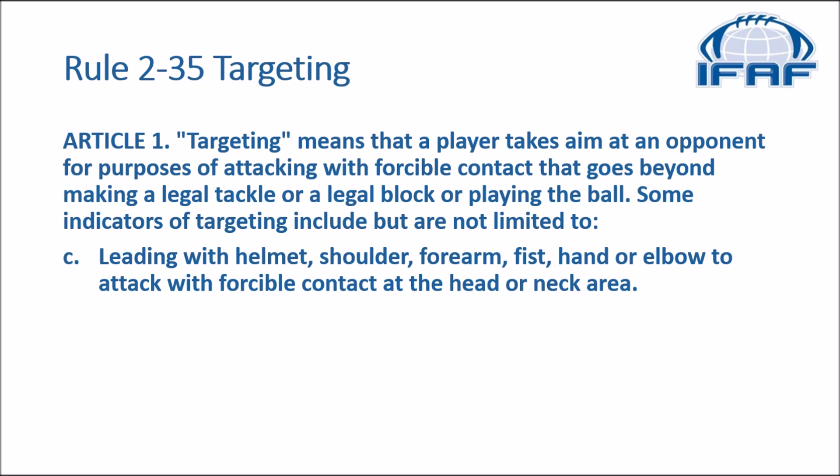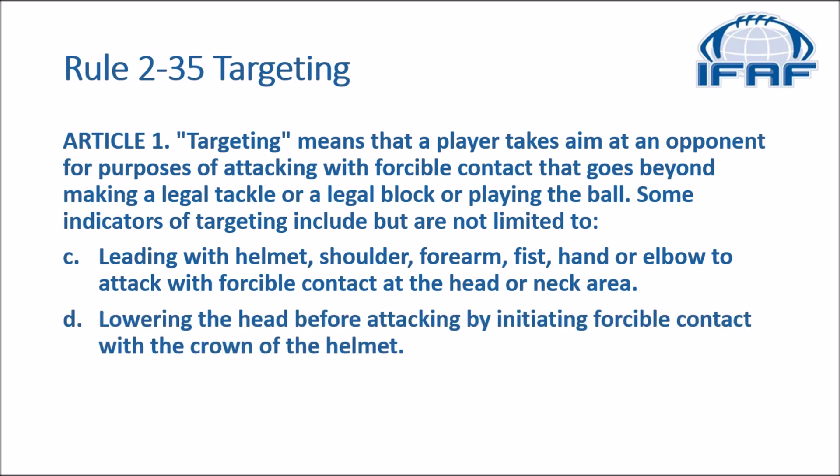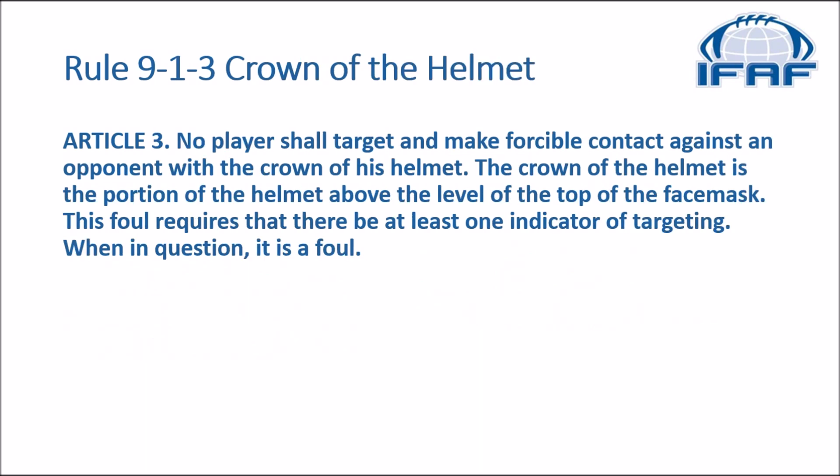C — leading with helmet, shoulder, forearm, fist, hand, or elbow to attack with forcible contact at the head or neck area; and D — lowering the head before attacking by initiating forcible contact with the crown of the helmet. In Rule 9-1-3, the crown of the helmet is defined. No player shall target and make forcible contact against an opponent with the crown of the helmet. The crown of the helmet is the portion of the helmet above the level of the top of the face mask. This foul requires that there be at least one indicator of targeting. When in question, it is a foul.